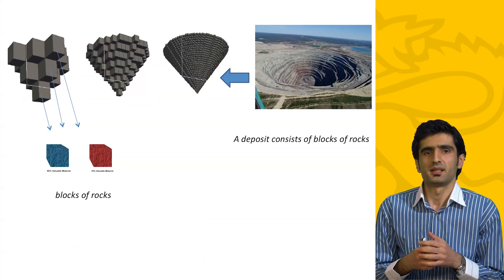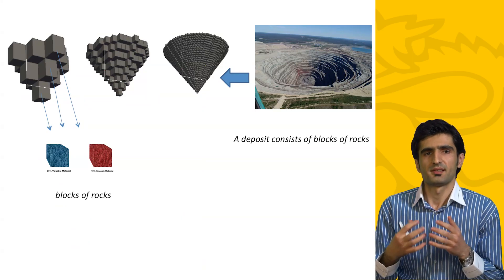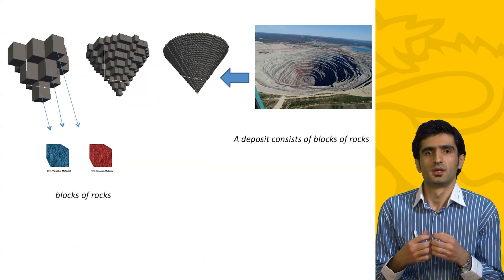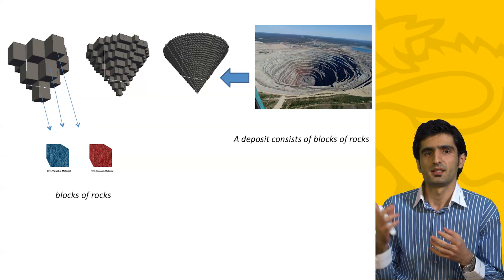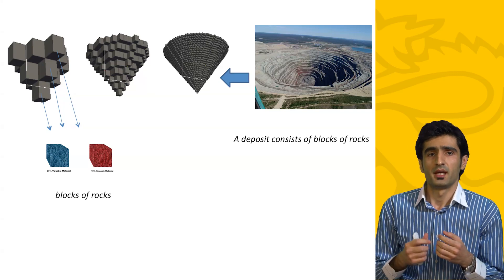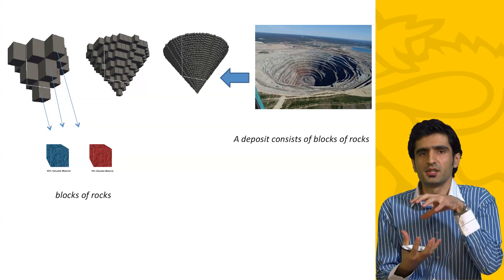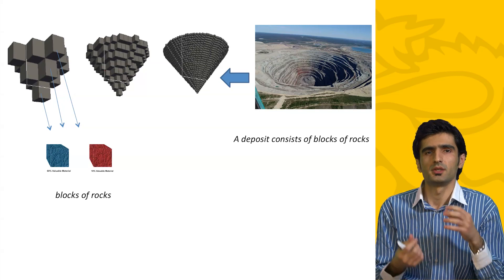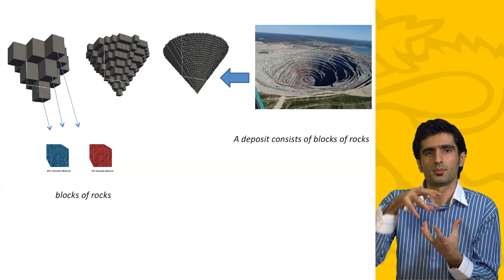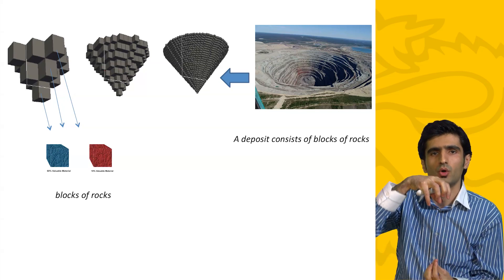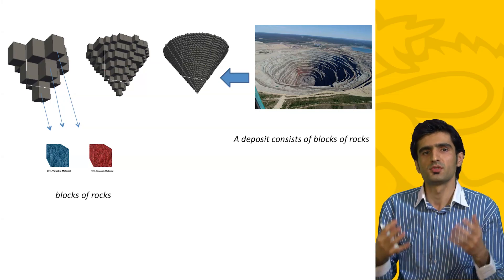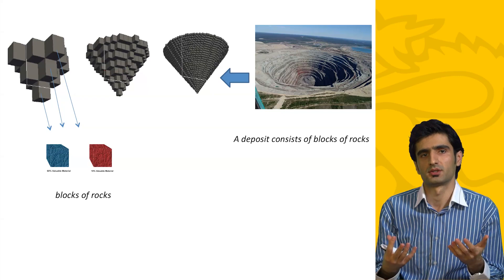Basically, a deposit consists of several blocks of rock. As you can see in the photo, if we could take the entire deposit out of the ground, it would look like an upside-down cone, and the cone contains millions of blocks of rock.